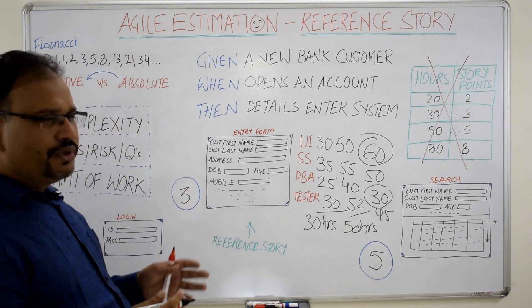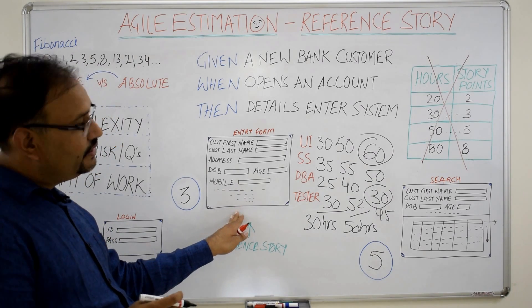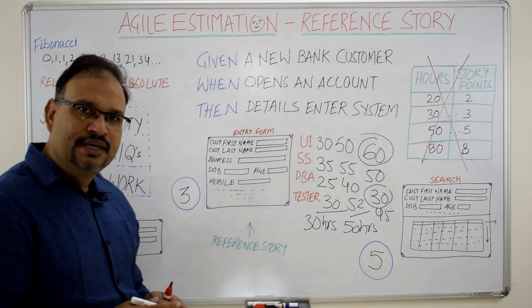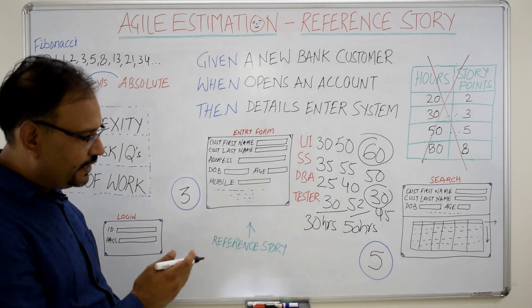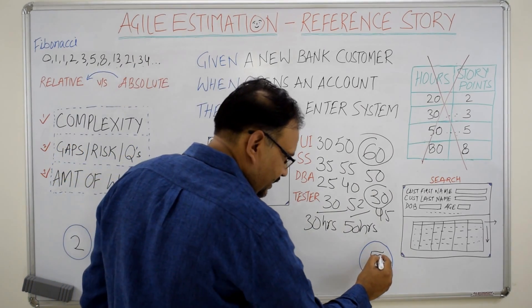Now there may be a story which is falling between these two stories, a story which is more complex than the reference story and less complex than this story. In that case, we will assign story point of 5 to that story and the search functionality story is going to attract story point of 8.